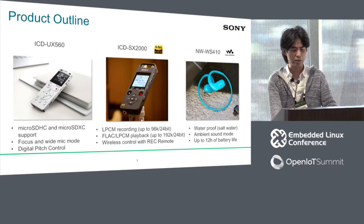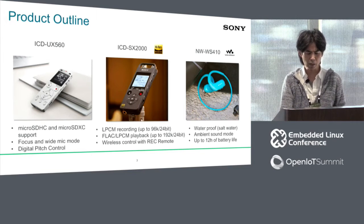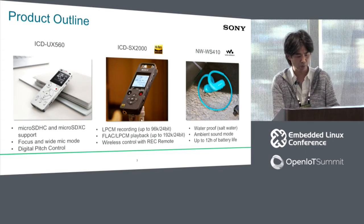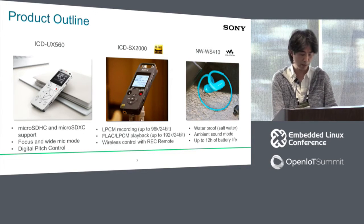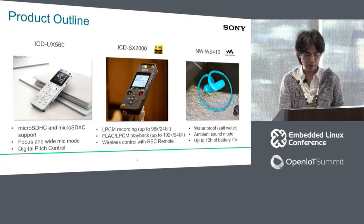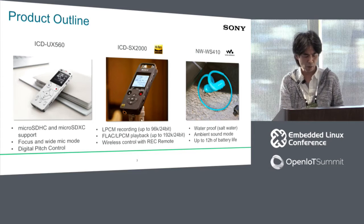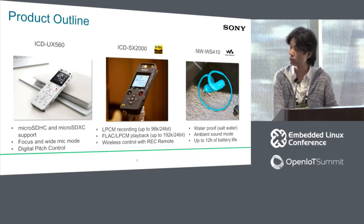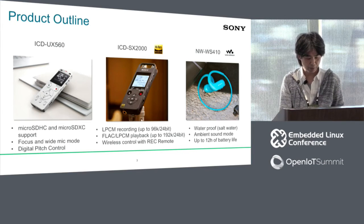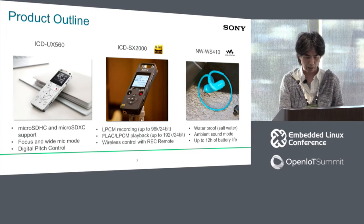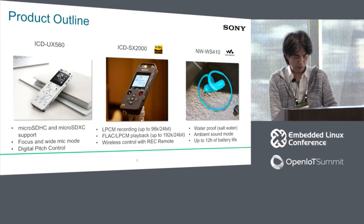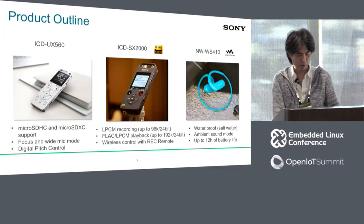They also support audio signal processing such as digital pitch control. The second one is called ICD-SX3s, which supports high-resolution audio recording up to 96K 24-bit as well as high-resolution playback up to 192K 24-bit. This model has Bluetooth, which is used for wireless control with a Record Remote app on a smartphone. And the last one is called Walkman WS3s, which is very small but supports ambient sound mode and can play back music up to 12 hours.